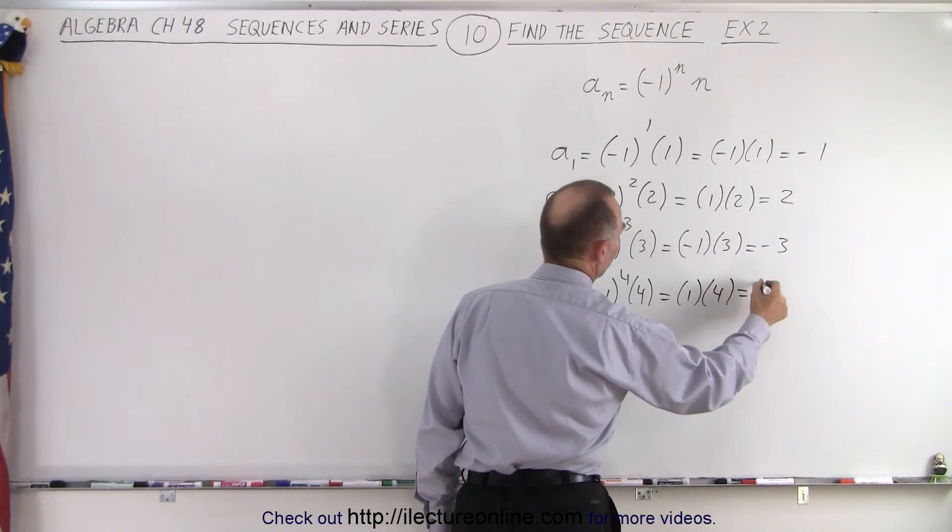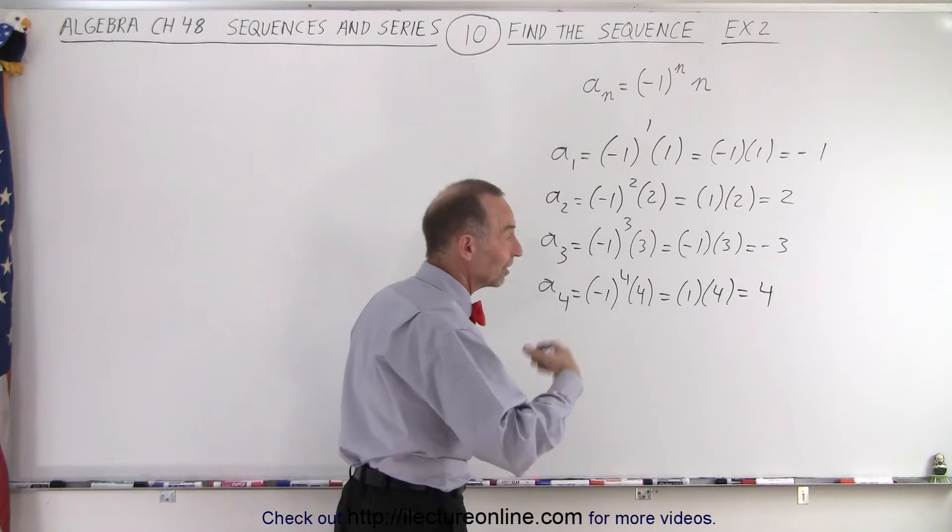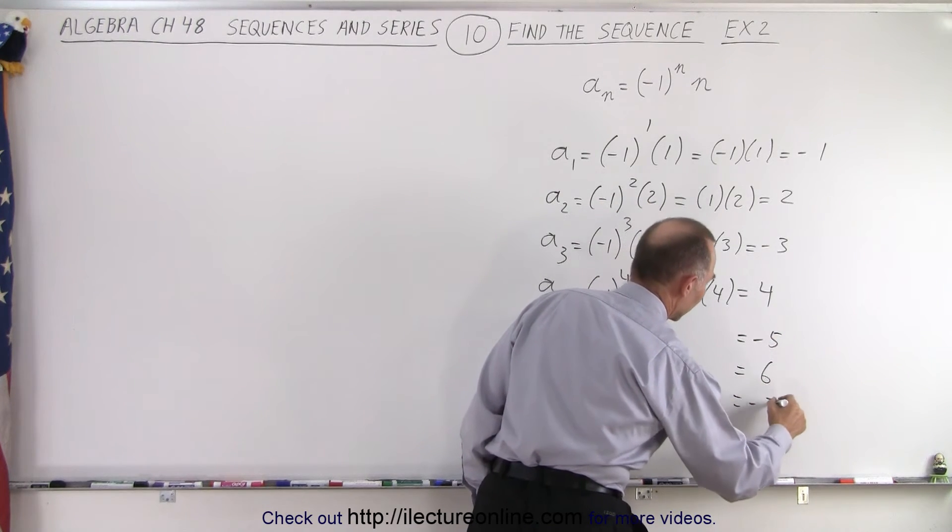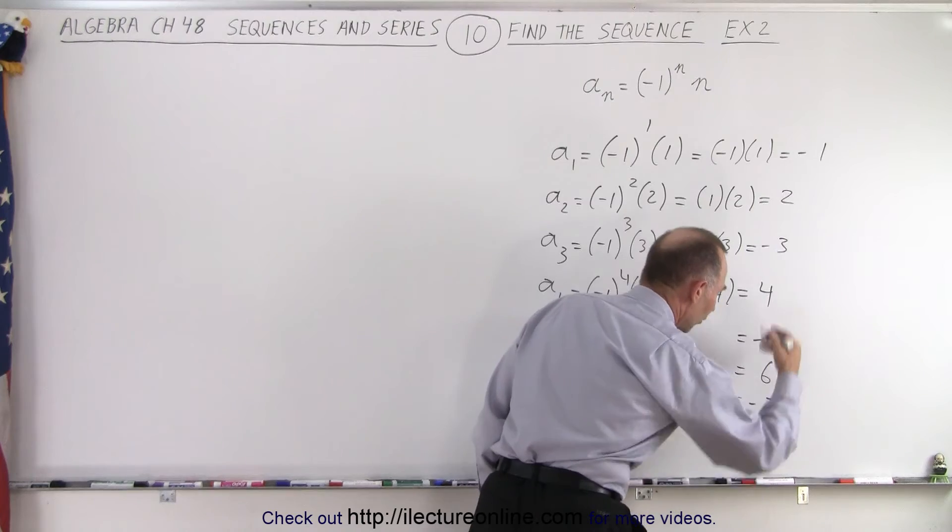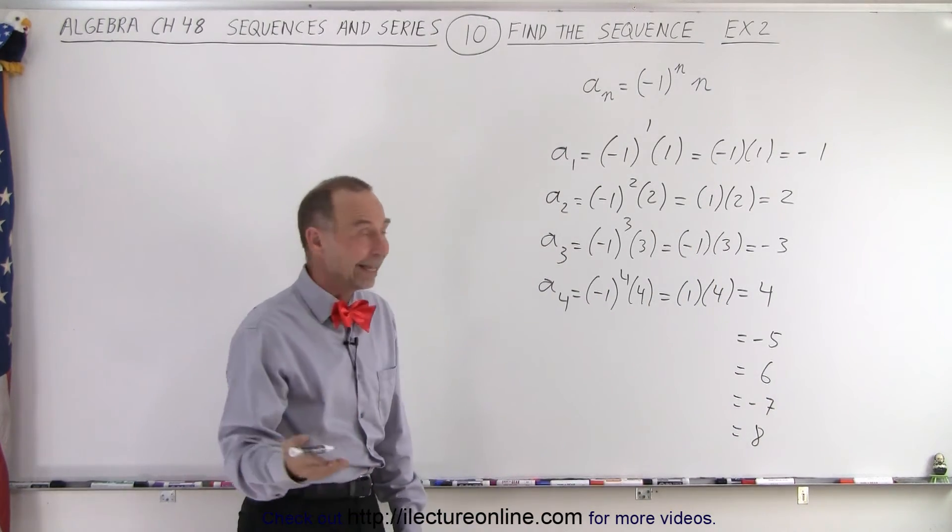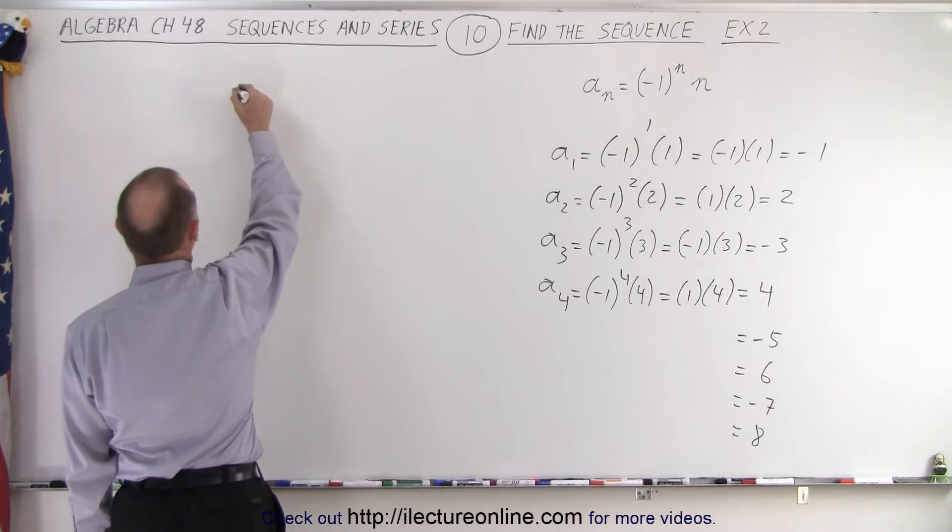Now I think you can see the pattern. The next one is going to be negative five, then it's going to be positive six, negative seven, positive eight, and so forth. Again, you can find it by just completing this process.